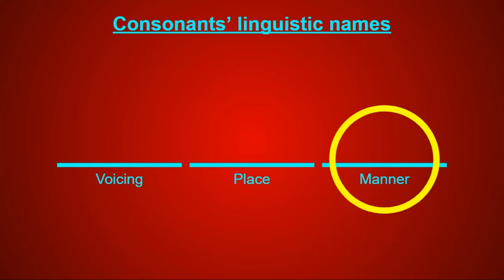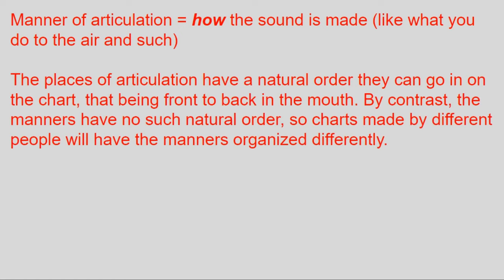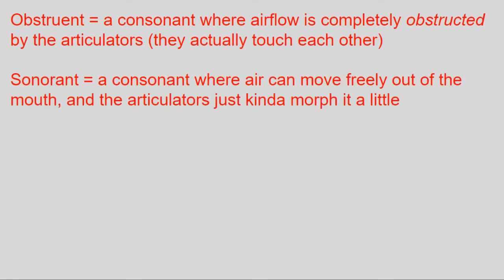So now we're at the final word of a consonant's name: the manner of articulation, or how exactly the sound is made. I'll present them in the order used on the IPA Phonetics app. All consonants fall into either obstruents — those which obstruct airflow — and sonorants — those that don't — and they're not necessarily together on the chart.